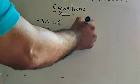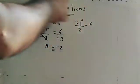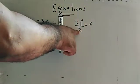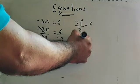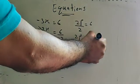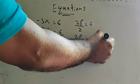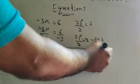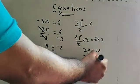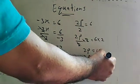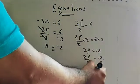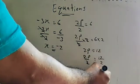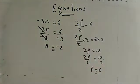Another one: 2p divided by 2 is equal to 6. How can we solve? This is division by 2. To cancel the division by 2, multiply both sides by 2. Then 2 and 2 cancel, leaving 2p. Six into 2 equals 12. Then divide both sides by 2. Twelve divide by 2 equals 6. So p is equal to 6.